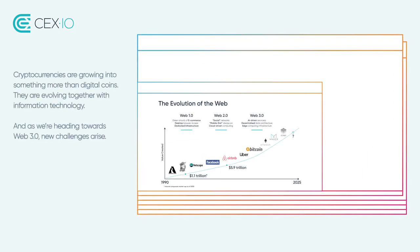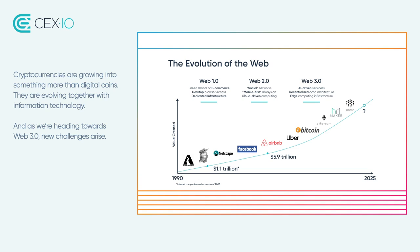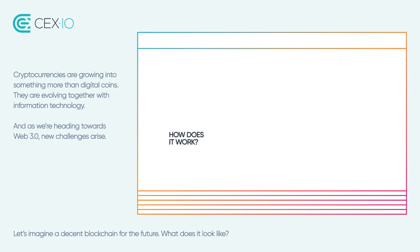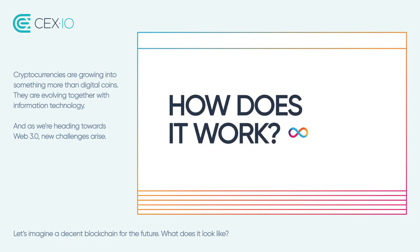Cryptocurrencies are growing into something more than digital coins. They are evolving together with information technology. And as we're heading towards Web 3.0, new challenges arise. Let's imagine a decent blockchain for the future. What does it look like? How does it work?